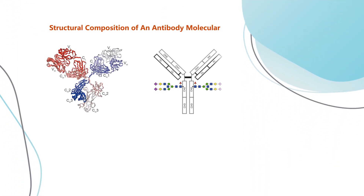Antibodies are immune system-related proteins called immunoglobulins. Each antibody consists of four polypeptides — two heavy chains and two light chains — joined to form a Y-shaped molecule. The amino acid sequence in the tips of the Y varies greatly among different antibodies. This variable region, composed of 110 to 130 amino acids, gives the antibody its specificity for binding antigen. The variable region includes the ends of the light and heavy chains. The constant region, also known as the FC region, determines the mechanism used to destroy antigens.